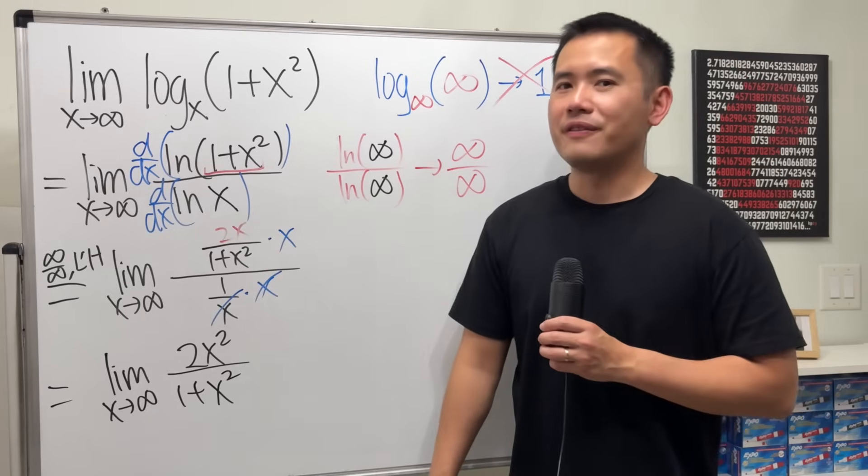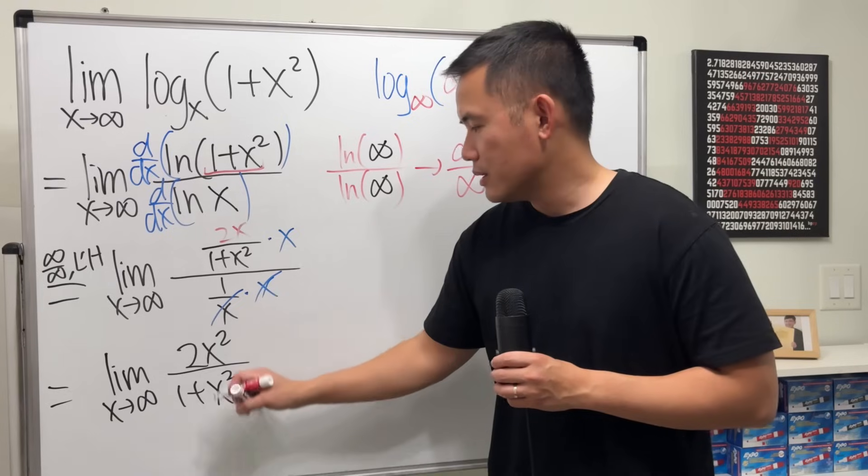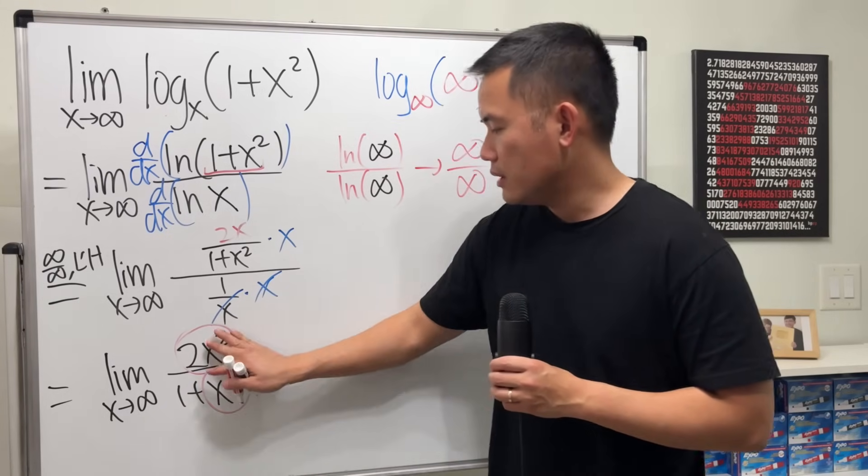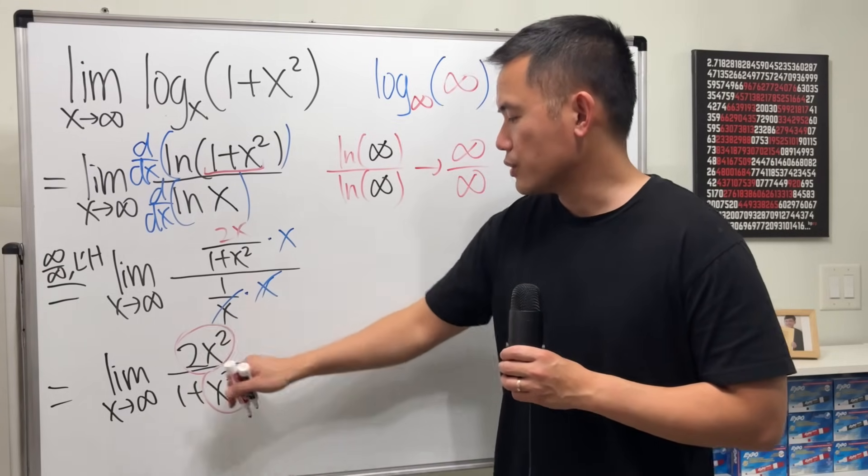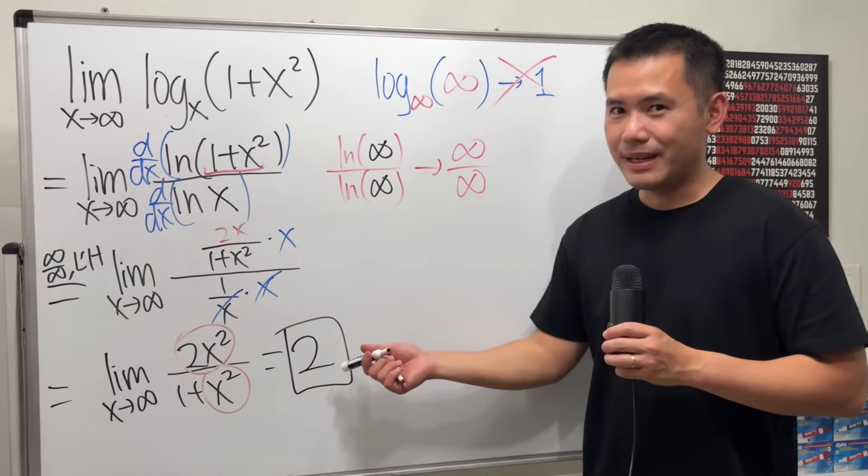Now, do this the fast way. Because we just have 2x squared and this is x squared, we can ignore the 1. So it's just this over that as x goes to infinity, and then they cancel. We just get 2. Pretty nice.